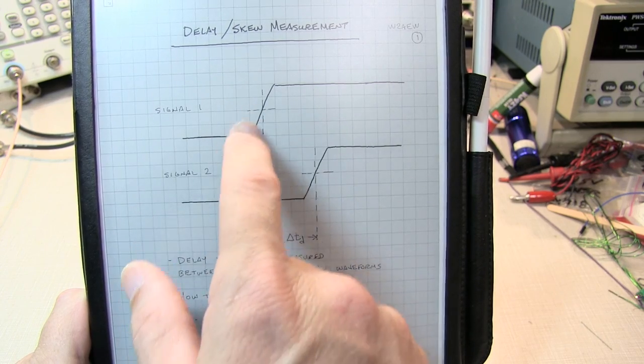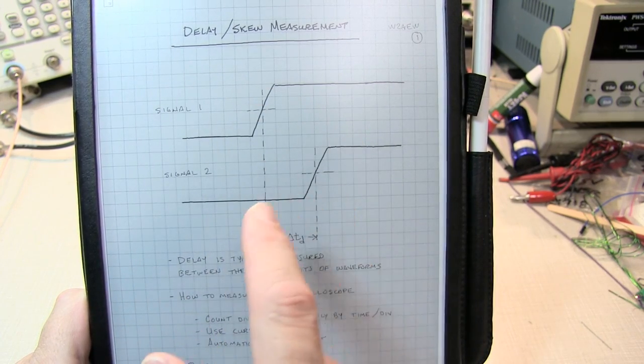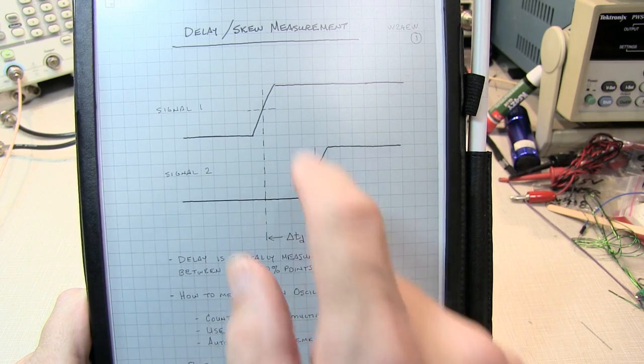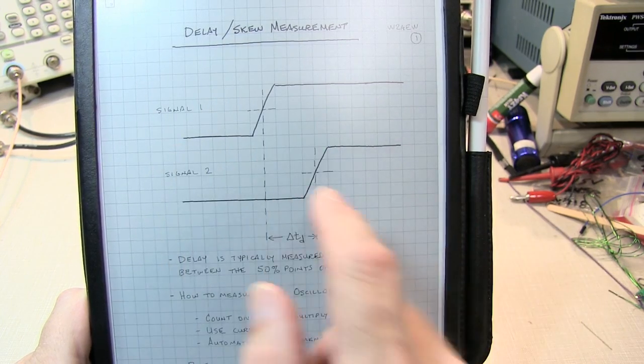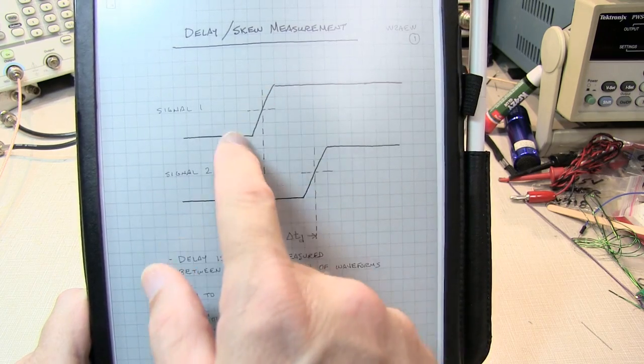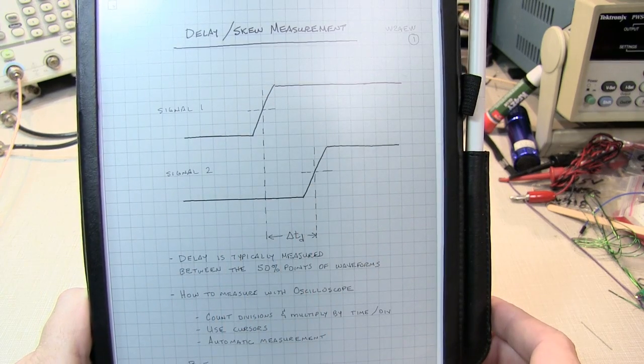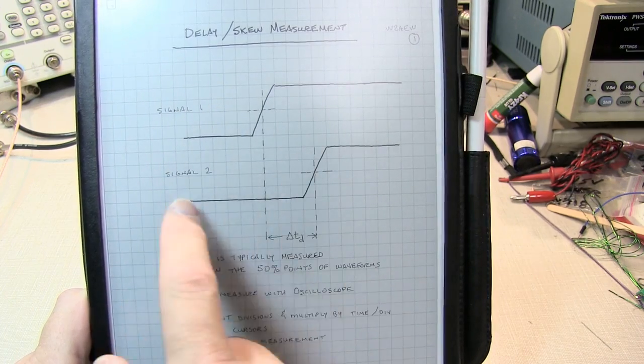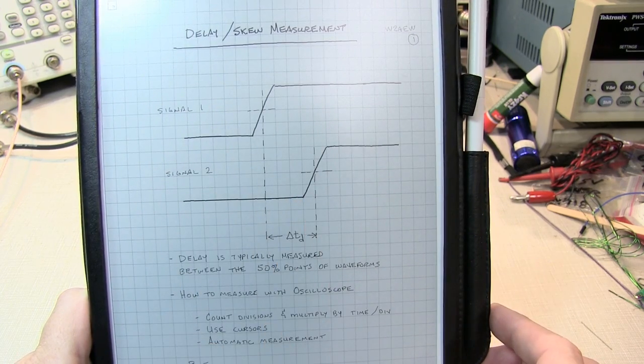Maybe the time difference between a clock and data signal for a setup and hold condition on a logic chip. By contrast, the skew term is often used when the time difference between two signals is not intended or not desired, such as a skew between multiple lines in a parallel data bus, for example.